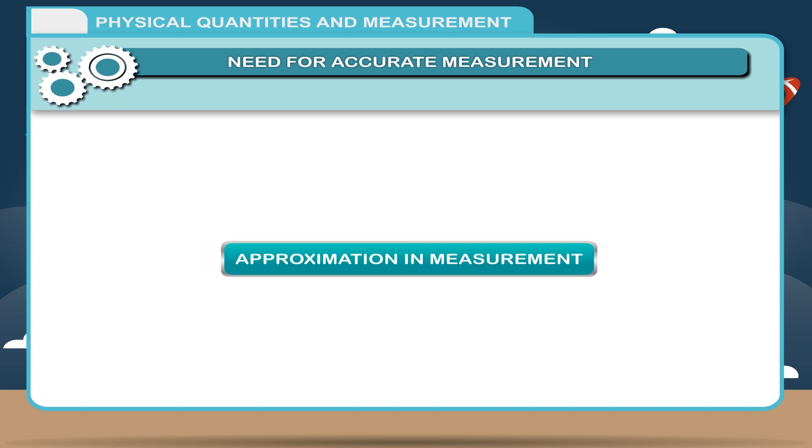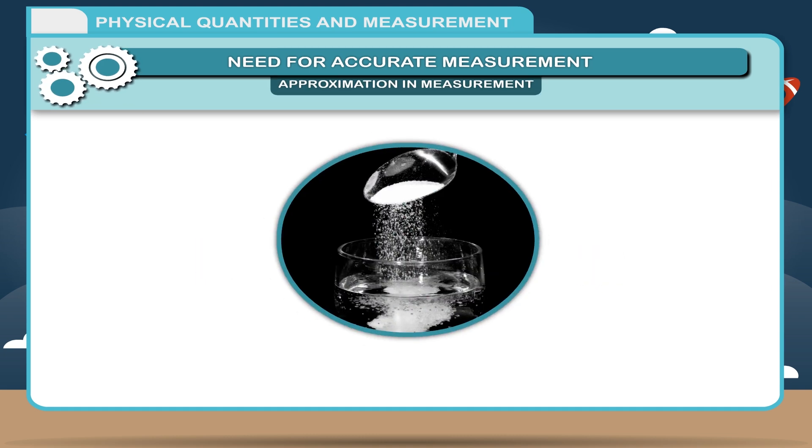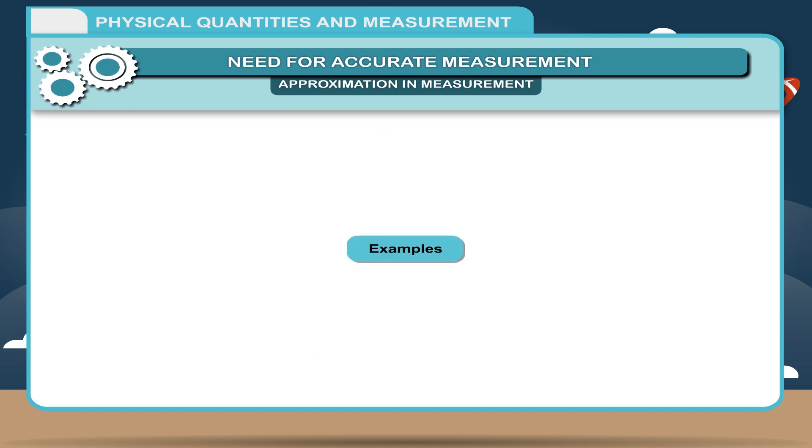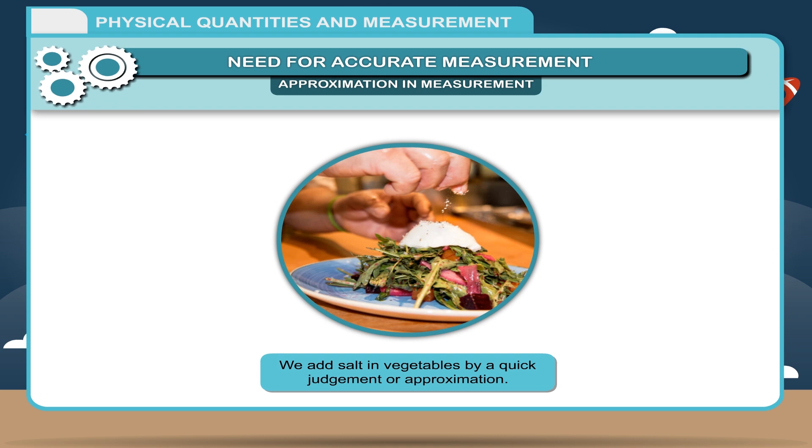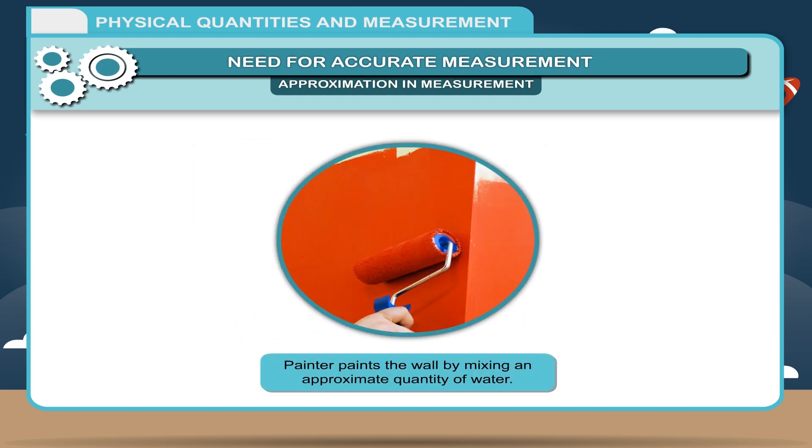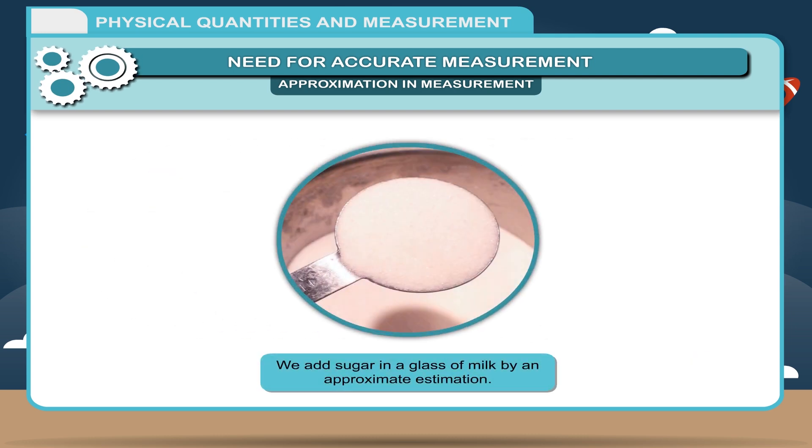Approximation in measurement: In our daily life, sometimes we need only approximate, near-to-accurate measurement. The approximate estimation is a quicker judgment about any measurement. Examples: We add salt in vegetables by a quick judgment or approximation. Painter paints the wall by mixing an approximate quantity of water. We add sugar in a glass of milk by an approximate estimation.